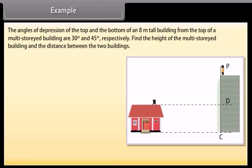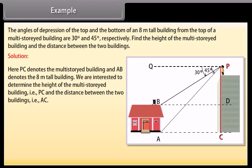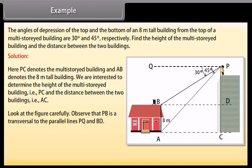The angles of depression of the top and the bottom of an 8 meter tall building from the top of a multi-storied building are 30 degrees and 45 degrees respectively. Find the height of the multi-storied building and the distance between the two buildings. Here, PC denotes the multi-storied building and AB denotes the 8 meter tall building. We are interested to determine the height of the multi-storied building, that is PC, and the distance between the two buildings, that is AC. Look at the figure carefully.